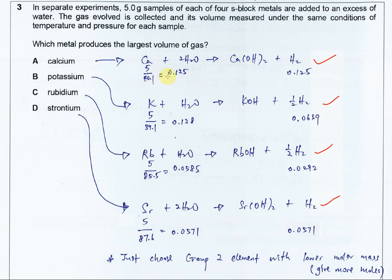So for calcium, after you calculate, you should get 0.125 which means hydrogen is 0.125.